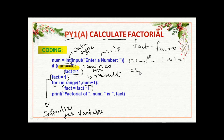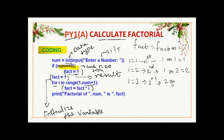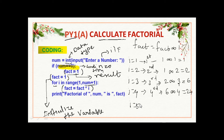Second iteration: i value is equal to 2, fact value is 1, so 1 star 2 gives 2 factorial. Third iteration: i value is equal to 3, fact value is 2, so 2 star 3 equals 6. Fourth iteration: i value is equal to 4, fact value is 6, so 6 star 4 equals 24. Fifth iteration: i value is equal to 5, fact value is 24, so 24 star 5 equals 120. The output is 120.